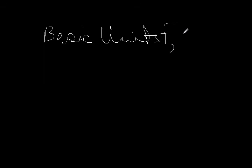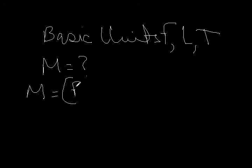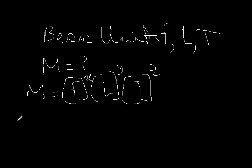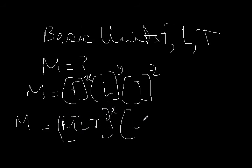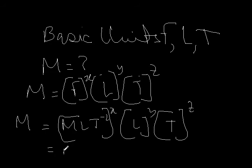Say your basic units are given in terms of force F, length L, and time T. What should be the dimension of mass? We write M equals F to the power X times L to the power Y times T to the power Z. Substituting the dimension of F as M·L·T⁻², we get M equal to (M·L·T⁻²)ˣ · Lʸ · Tᶻ. Collecting powers: M has power X, L has power X plus Y, and T has power minus 2X plus Z.